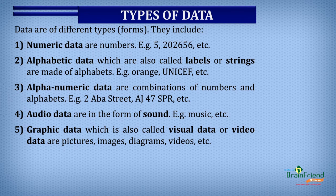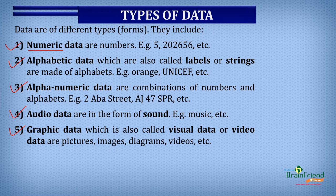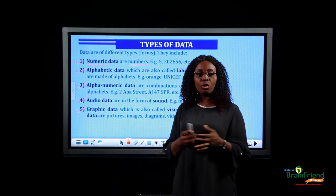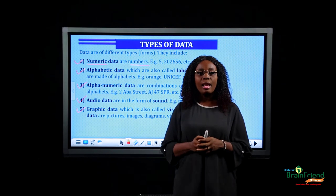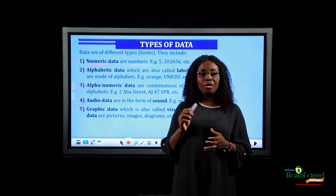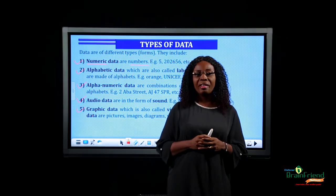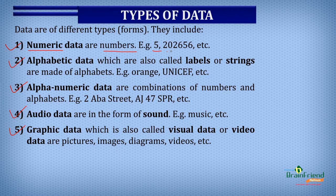There are different types of data. The five types of data we will be considering in this lesson are numeric data, alphabetic data, alphanumeric data, audio data, and graphic data. Numeric data are numbers — for example, a person's phone number is made up of just numbers. Some other examples of numeric data are 5, 2, 0, 2, 6, 5, 6, 6, and so many other numbers.